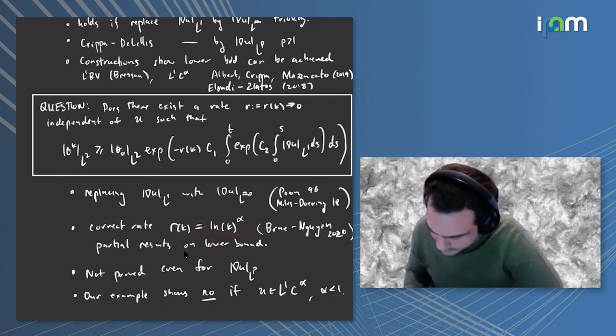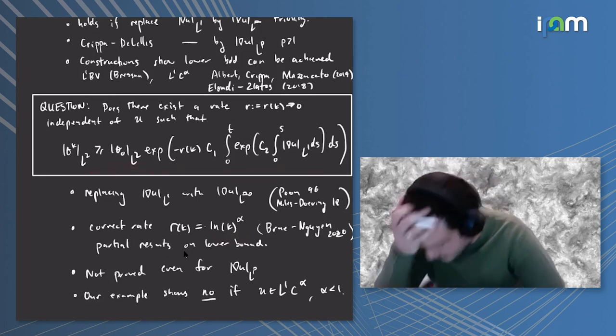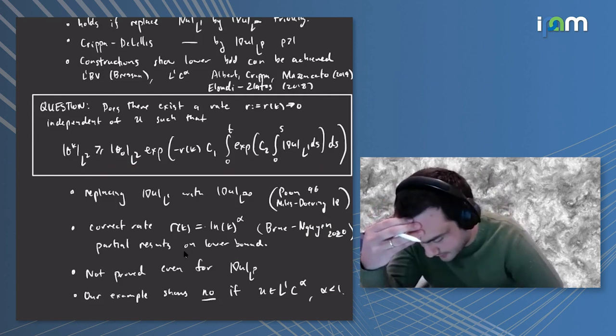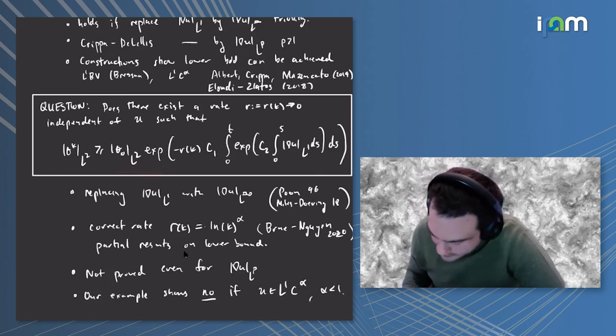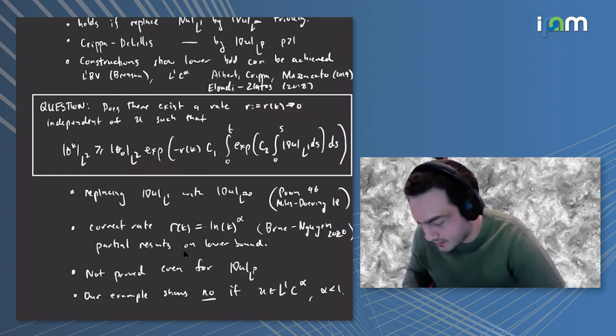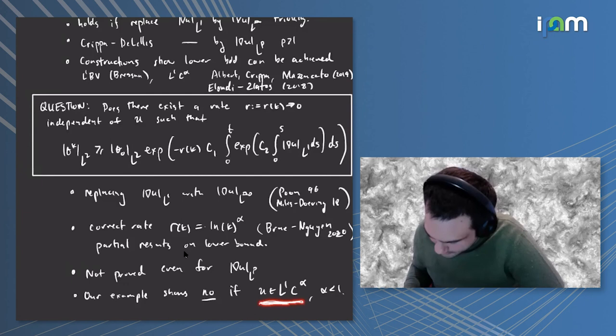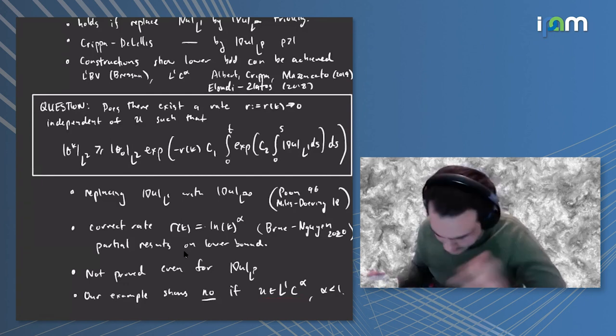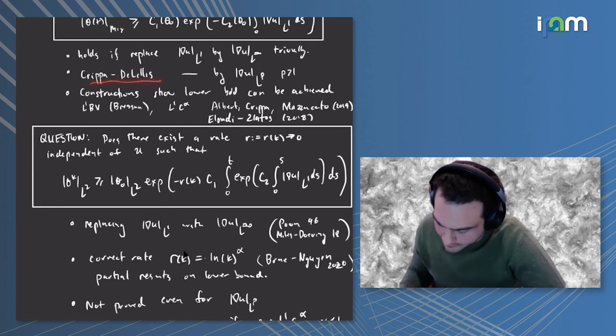The significance of this relative to the problem we were talking about is that a lower bound on the energy is an upper bound on the dissipation. If any such bound holds with r of kappa going to zero, then the dissipation would necessarily vanish as kappa goes to zero, perhaps with a very slow rate, maybe logarithmic. But we have an example that if you're just here then no such bound can hold. This is also open just for replacing L1 by Lp, the analog of this result for the inviscid problem.